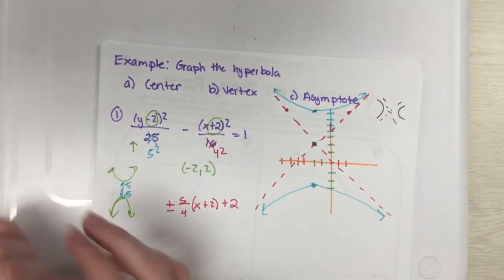Now I can go ahead and just sketch this graph. I'll go out to my asymptotes and that will be my hyperbola.